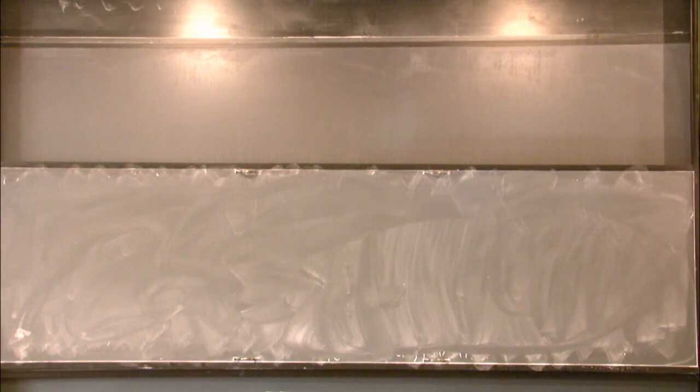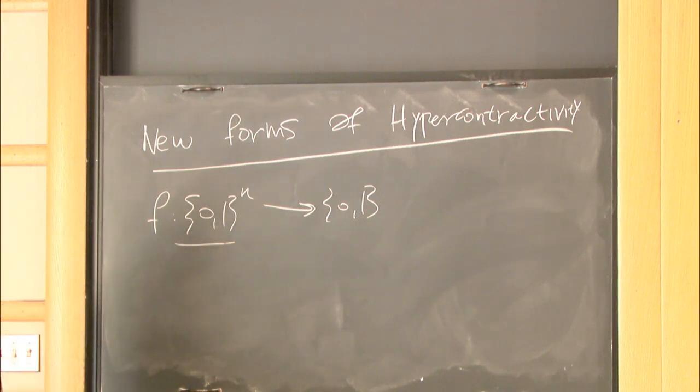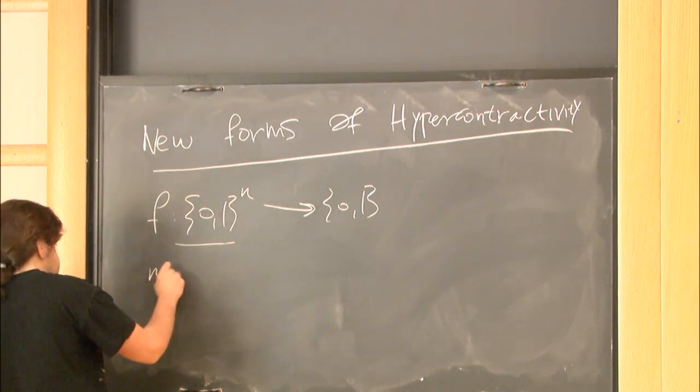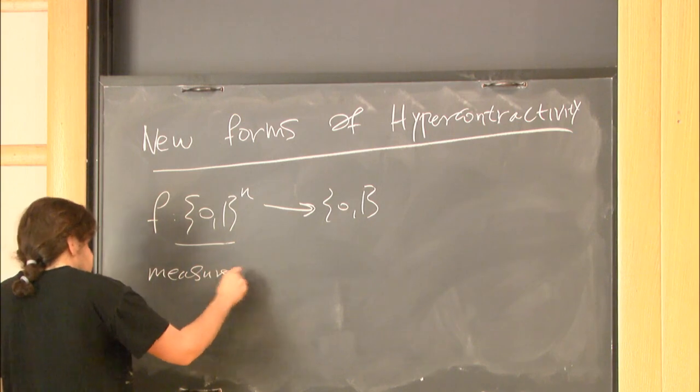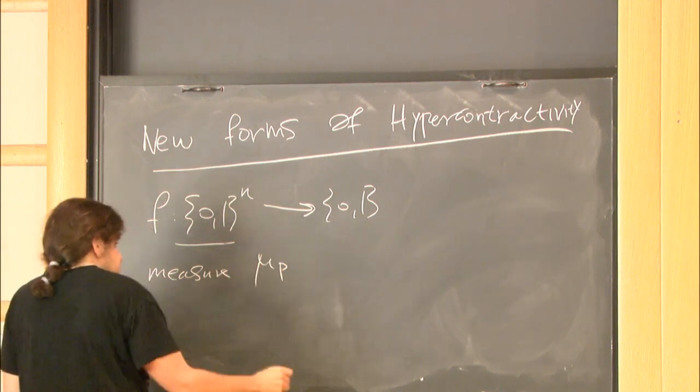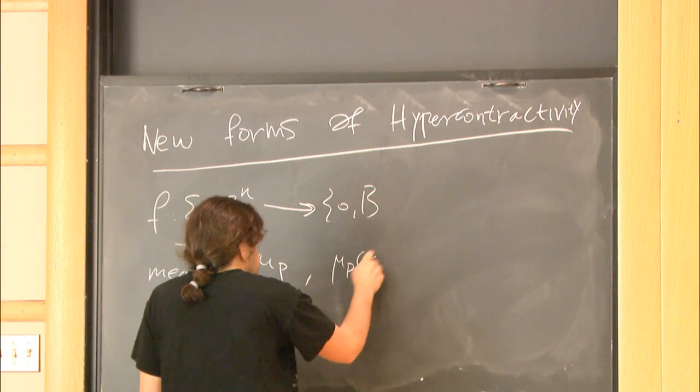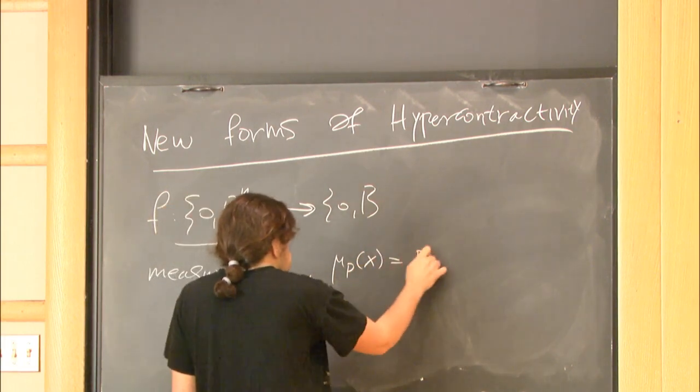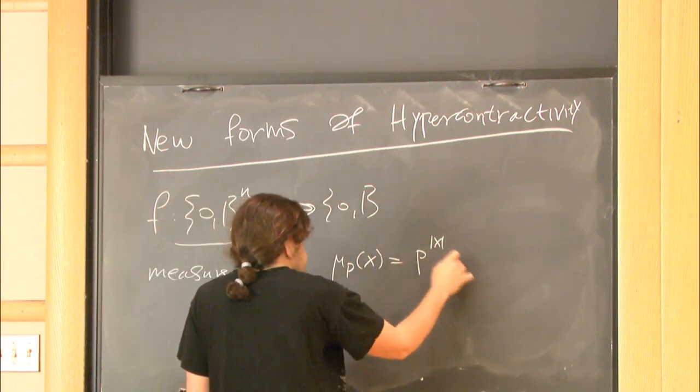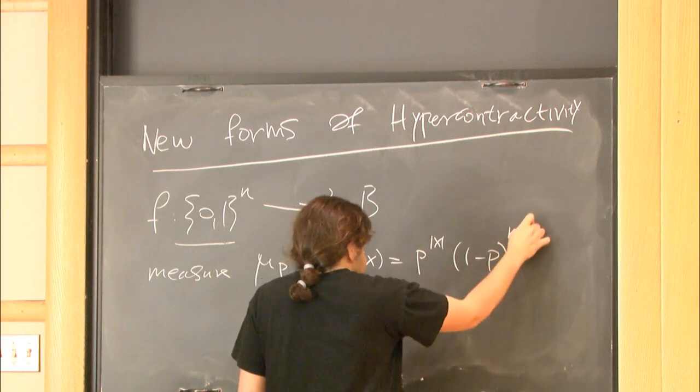Before we talk about anything in the title, let me give you the basic setup that we've been working with. In this talk, the main object will be boolean functions over the hypercube, where we think of the domain of the hypercube as a product space with the measure mu p, which assigns each vector x probability equal to p to the number of 1s in x times 1 minus p to the number of 0s in x.